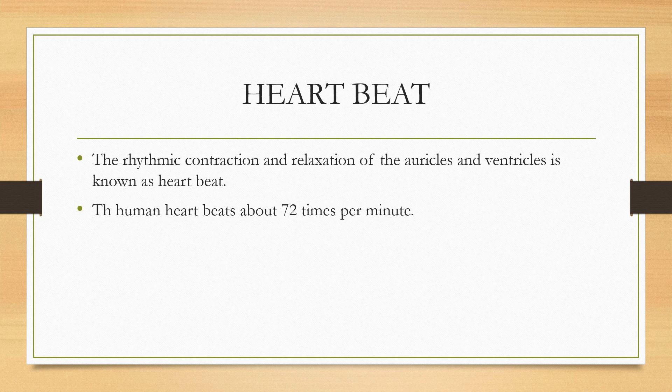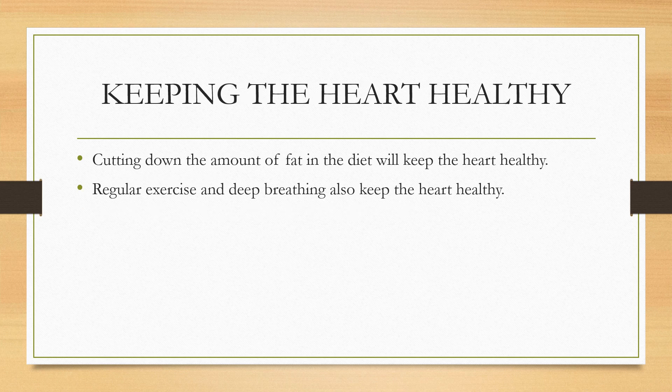The rhythmic contraction and relaxation of the auricles and ventricles is known as heartbeat. The human heart beats about 72 times per minute. Doctors hear heartbeat using a stethoscope. Cutting down the amount of fat in the diet will keep the heart healthy. Extra fat in the body puts extra pressure on the heart as it has to push the blood to a greatly enlarged body. Regular exercise and deep breathing also keep the heart healthy.